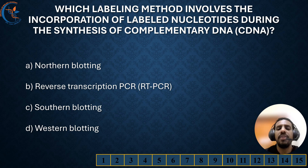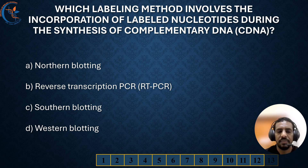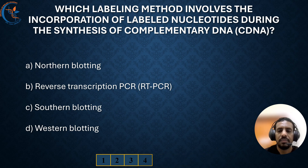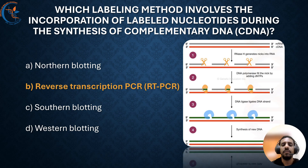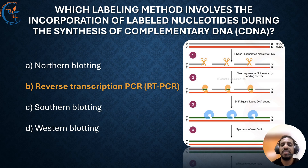Which labeling method involves the incorporation of labeled nucleotides during the synthesis of complementary DNA? The correct answer is reverse transcription PCR. Reverse transcription PCR involves the incorporation of labeled nucleotides during the synthesis of cDNA, allowing for detection and quantification of specific RNA sequences.